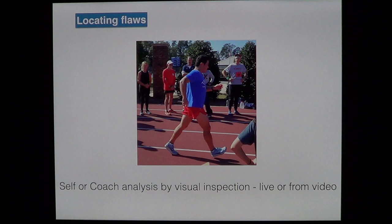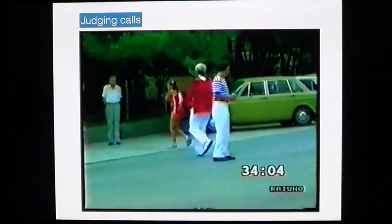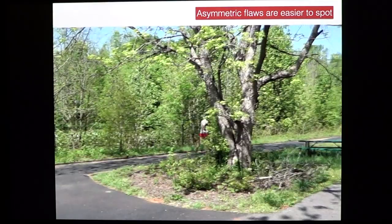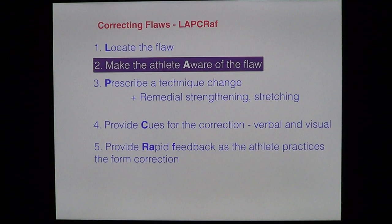The athlete or the coach can analyze by visual inspection, and this may be live or from video. You can also talk to the judges if you've got a disqualification problem — listen to the judges, they know what they're talking about, they're often quite qualified as coaches as well. Find out what you've been doing wrong. If you're coming back from an injury, you may have an asymmetrical flaw due to favoring one side.